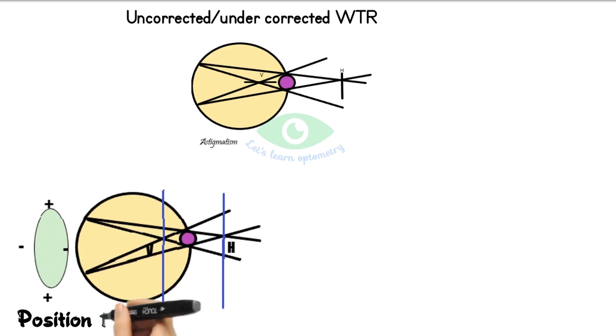Now we place the JCC with its minus axis at 180 degrees. This will cause the horizontal meridian to move forward and the vertical meridian to move backwards from their previous positions. Thus both focal lines will move towards the retina. Note the size of circle of least confusion becomes smaller.